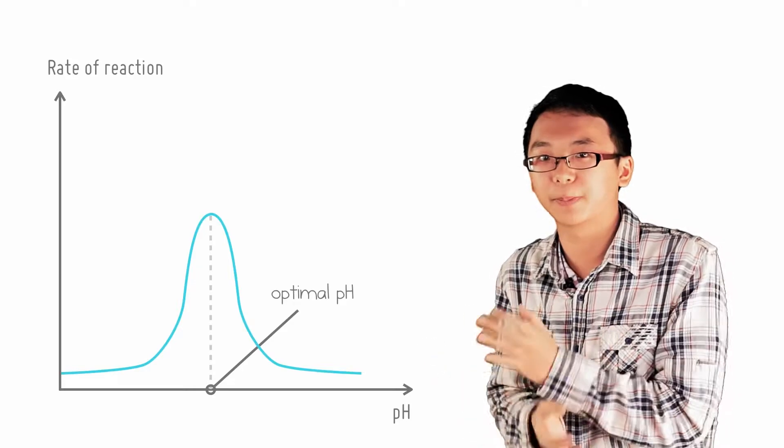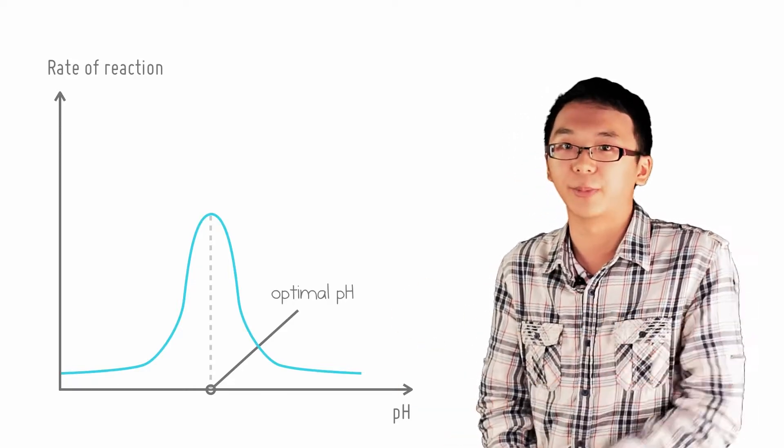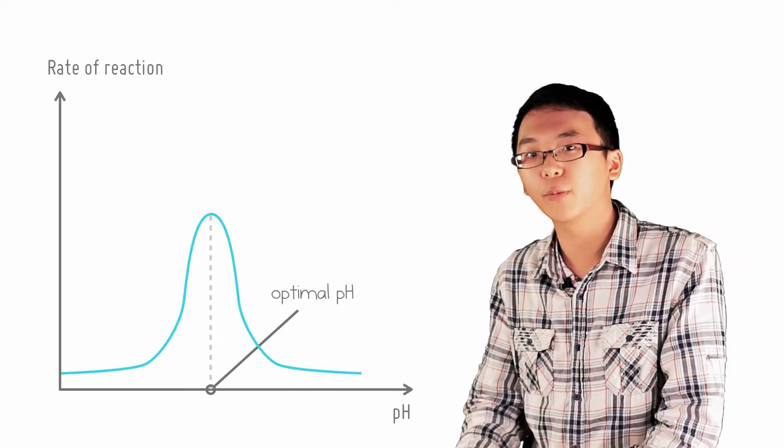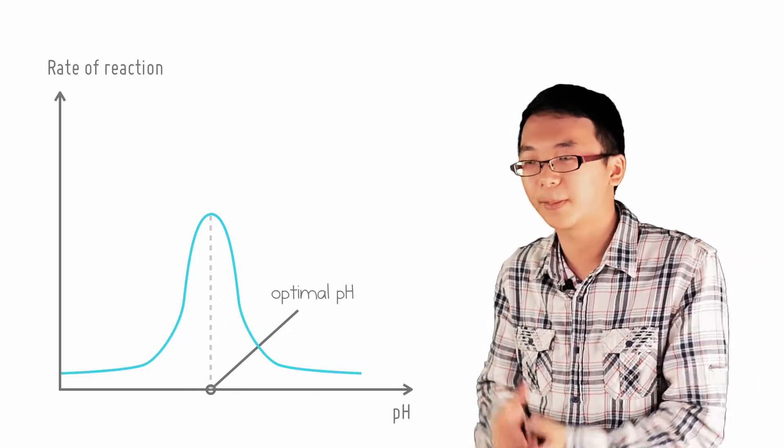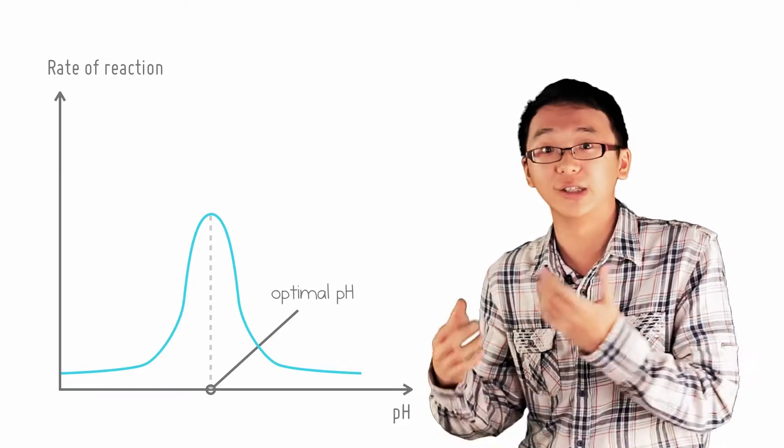This makes sense because enzymes are deployed to work in very different environments. Enzymes in your stomach, for example, for digestion must work at low pHs due to the acid, while enzymes in other parts of your body will want to work at a relatively neutral pH.